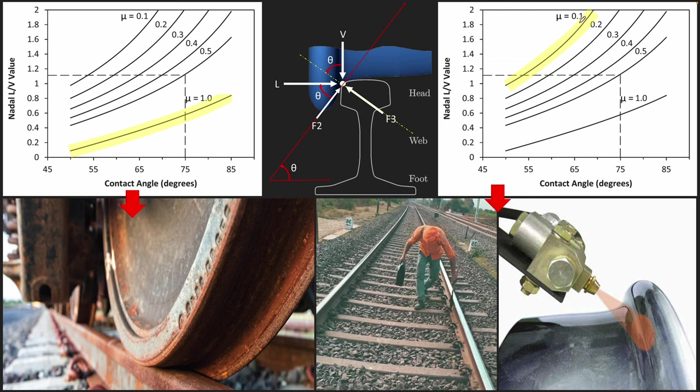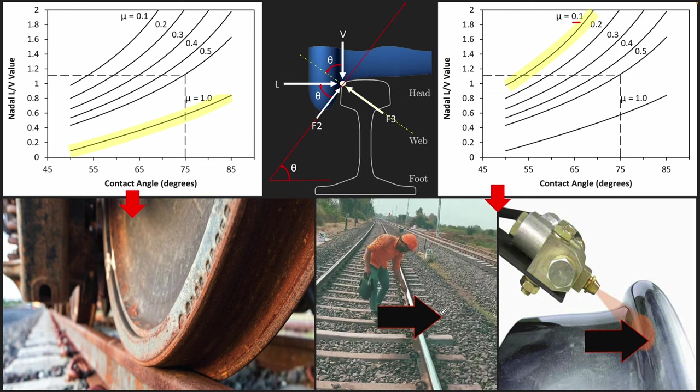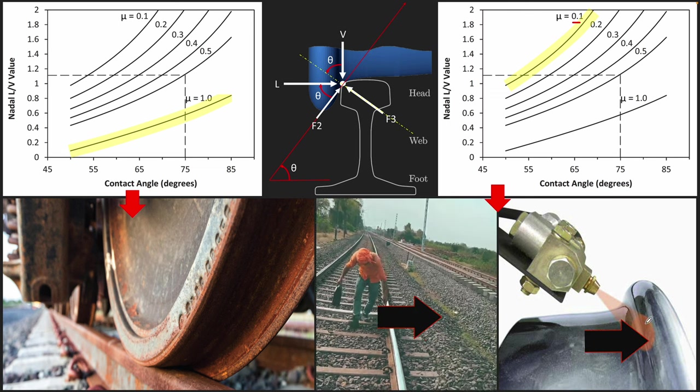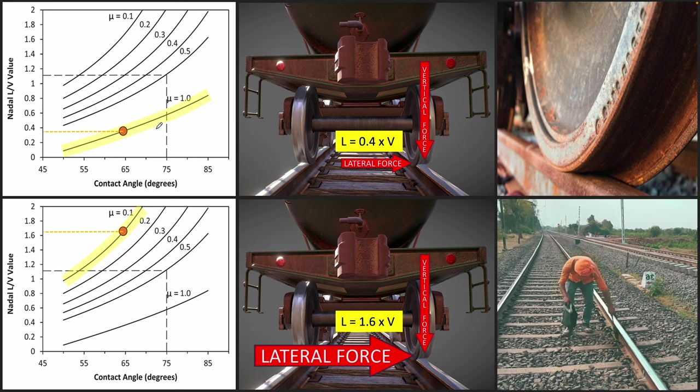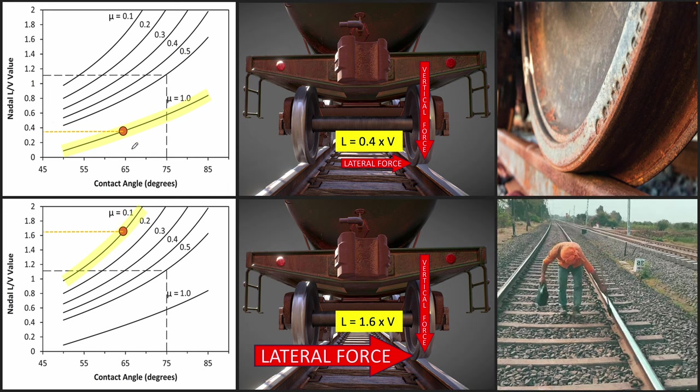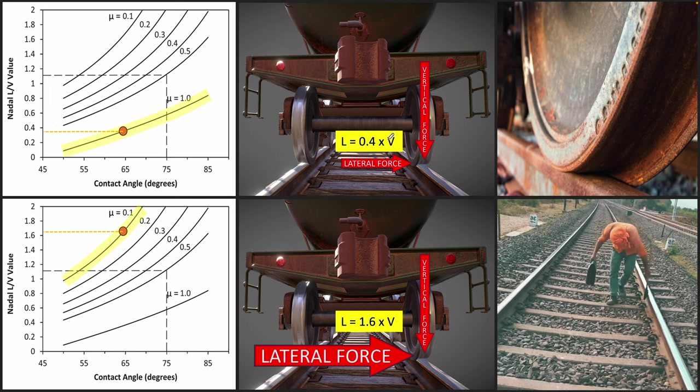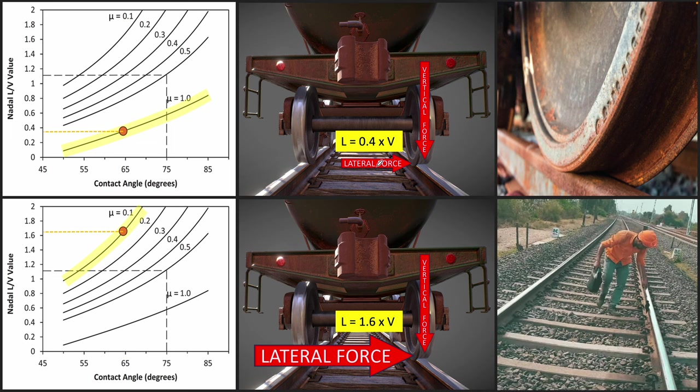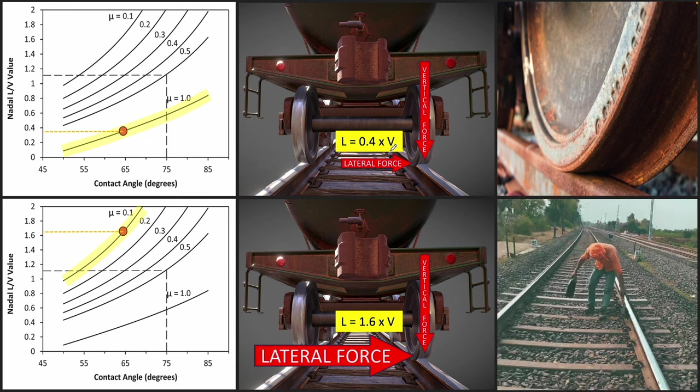Whereas the low coefficient of friction 0.1 are properly lubricated rails and properly lubricated flanges. So what this means is that for high coefficient of friction, the Nadal ratio is close to 0.4. That means that in order for your train to stay on tracks and not derail, your lateral force can only be 0.4 times or 40% of the vertical force.